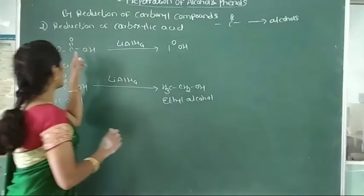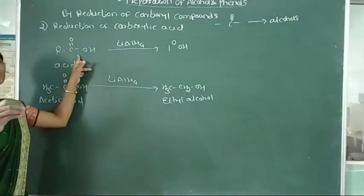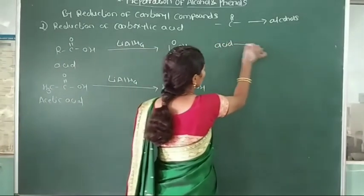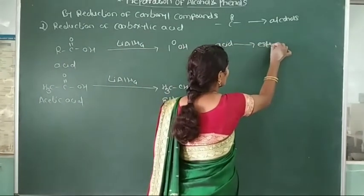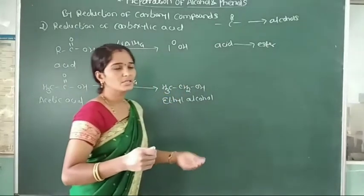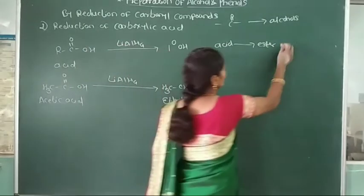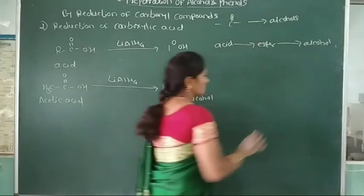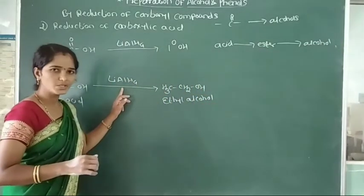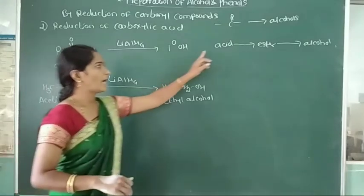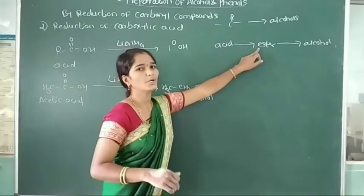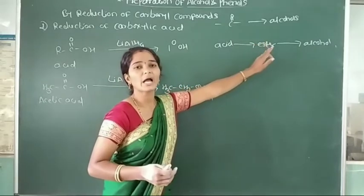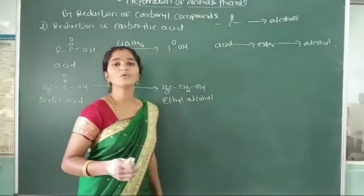Since lithium aluminium hydride is an expensive agent, this acid is first transferred into an ester. Then acid catalyses the hydration of the ethyl ester. The ester after catalytic hydrogenation gives formation of alcohol.